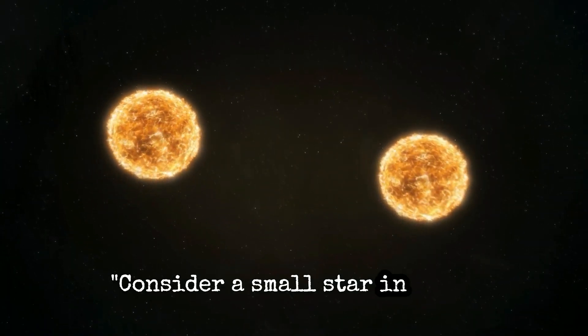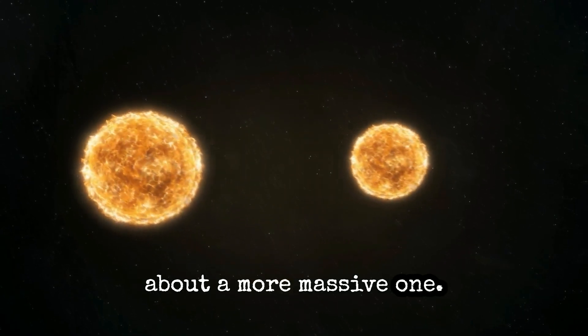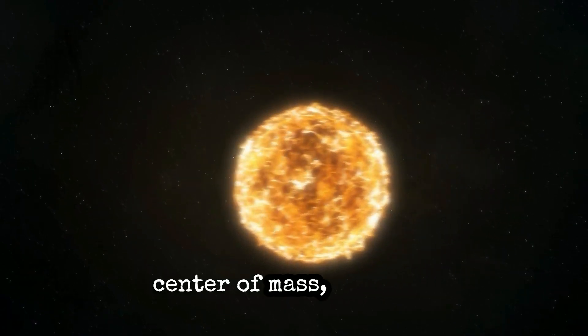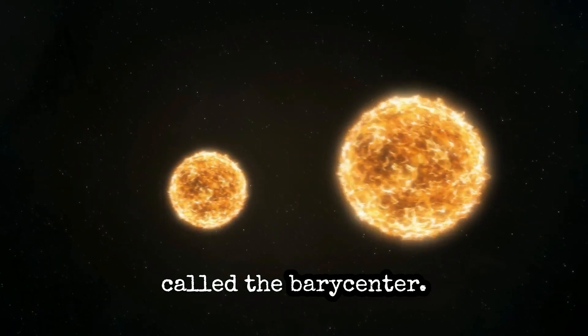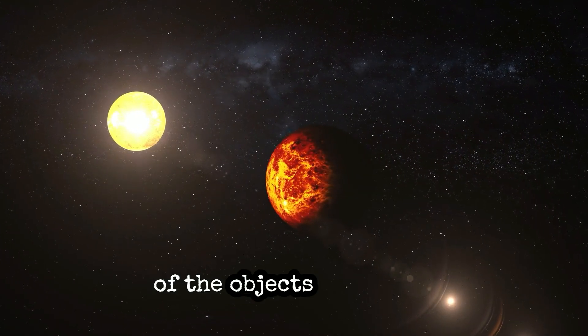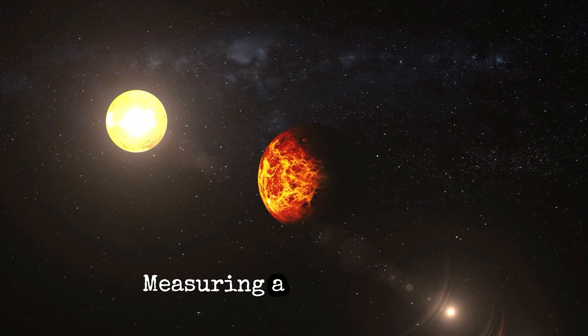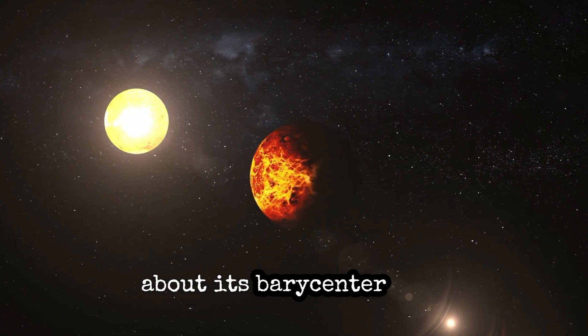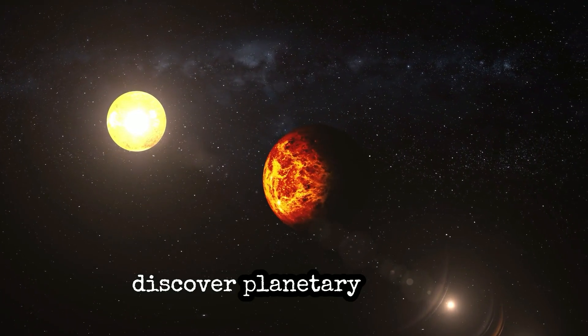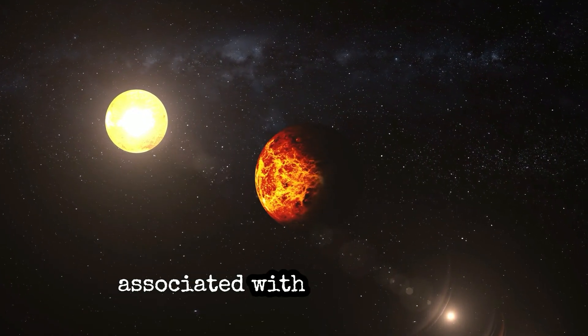Scientists further elaborate: consider a small star in orbit about a more massive one. Both stars actually revolve about a common center of mass, which is called the barycenter. This is true no matter what the size or mass of each of the objects involved. Measuring a star's motion about its barycenter with a massive planet is one method that has been used to discover planetary systems associated with distant stars.